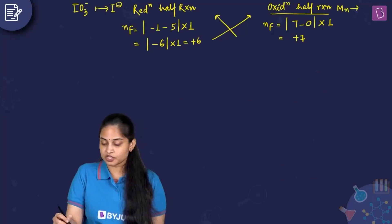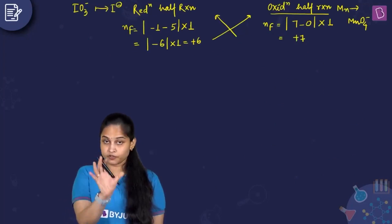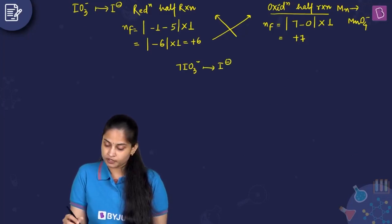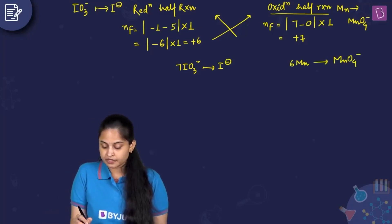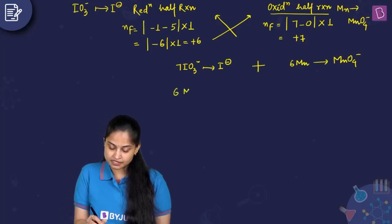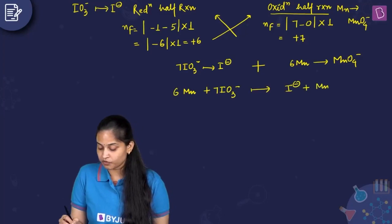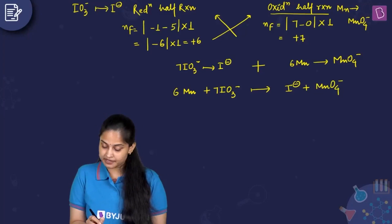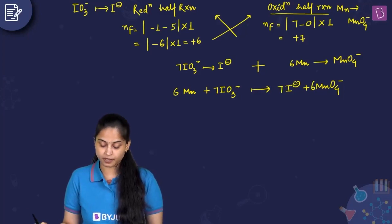Adding the two half reactions: 6 Mn + 7 IO₃⁻ gives 7 I⁻ + 6 MnO₄⁻. Now balancing atoms other than oxygen and hydrogen: reactant side has 6 Mn, so product has 6 MnO₄⁻; reactant side has 7 iodine atoms, so product has 7 I⁻.